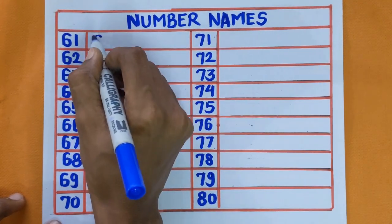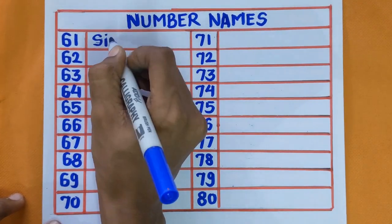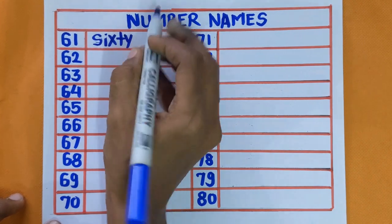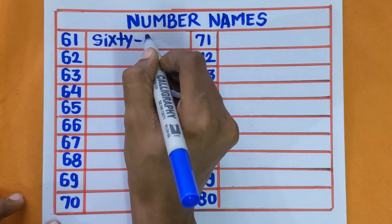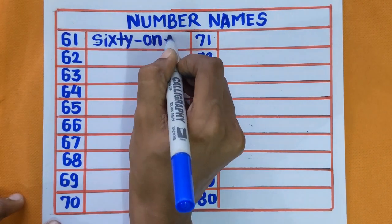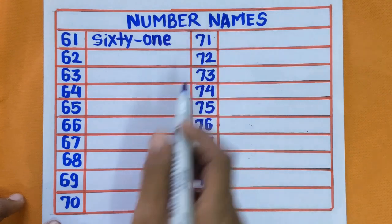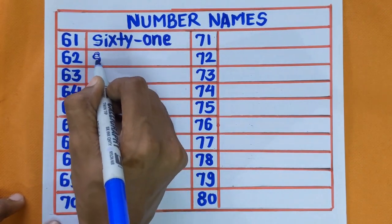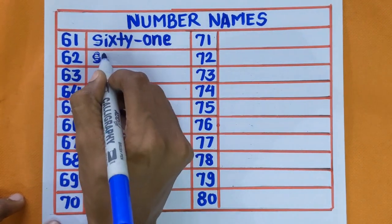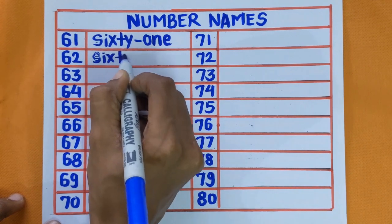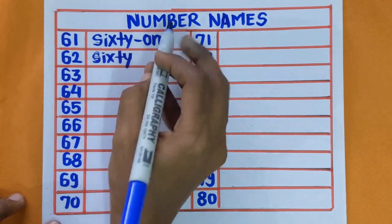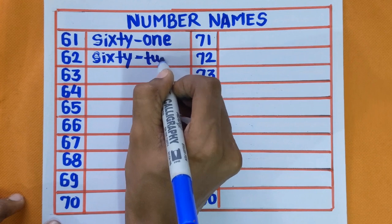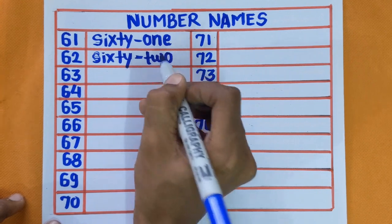61 — S-I-X-T-Y-O-N-E. 61. Next is 62 — S-I-X-T-Y-T-W-O.